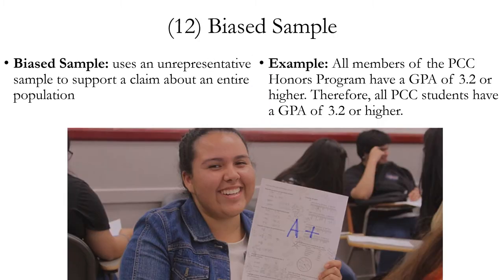A biased sample fallacy uses an unrepresentative sample or examples to support a claim about an entire population. Example: all members of the PCC Honors Program have a GPA of 3.2 or higher; therefore, all PCC students have a GPA of 3.2 or higher. Looking only at PCC Honors Program students to calculate the average GPA of all PCC students is a very biased sample, because in order to get into the Honors Program you have to have a GPA of 3.2 or higher. Another example is the bears and fur color — if you only look in the San Gabriel Valley, it's a highly biased sample in terms of geography.